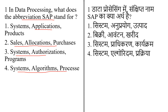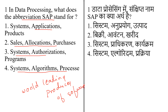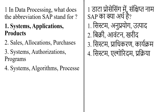SAP is the world's leading producer of software for the management of business data processes. The full form is Systems Applications and Products. SAP provides future-proof cloud ERP solutions that power the next generation of business. SAP can boost organizational efficiency and productivity by automating repetitive tasks, making better use of time, money, and resources. The correct answer is option 1: Systems Applications and Products.